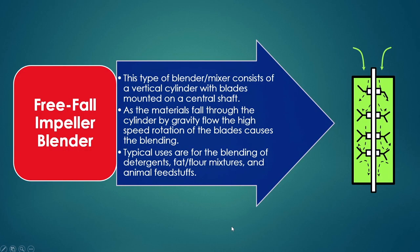The fall impeller blender is another continuous blender. It consists of a vertical cylinder with blades mounted on a central shaft. As materials fall through the cylinder by gravity, the high-speed rotation of the blades causes blending. Typical uses are for blending detergents, fat or flour mixtures, and animal feedstuffs.